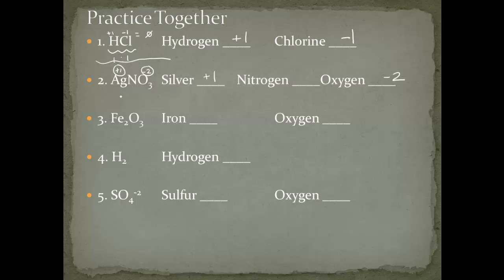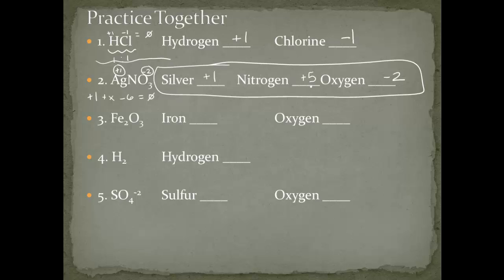For silver nitrate (AgNO3): silver is a monatomic ion, so it gets its normal charge of +1. In the nitrate portion, oxygen is always -2. Nitrogen is not its usual ion number — we need to use baby algebra. One silver (+1) plus one nitrogen (x) plus three oxygens (3 × -2 = -6) must equal zero. Solving: 1 + x - 6 = 0, so x = +5. Nitrogen's oxidation number is +5.